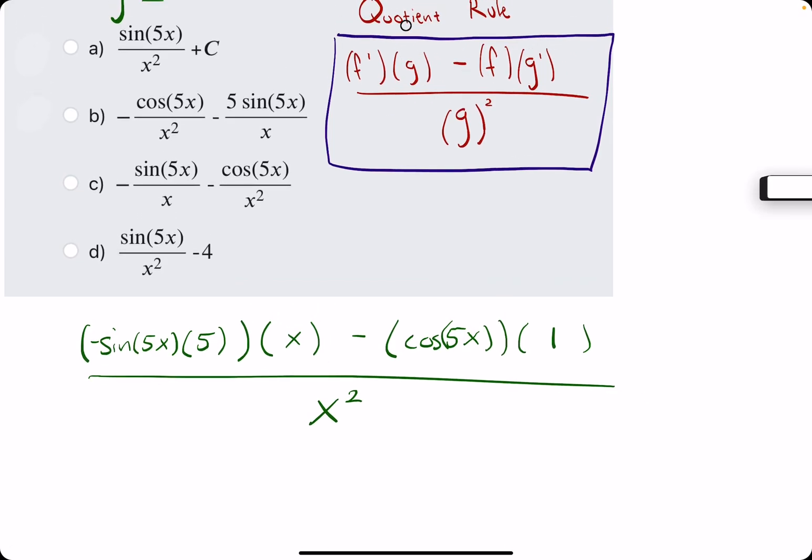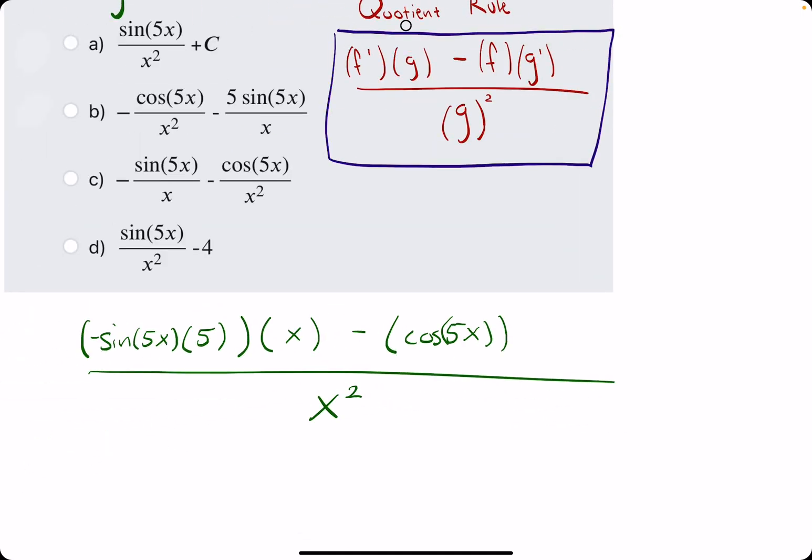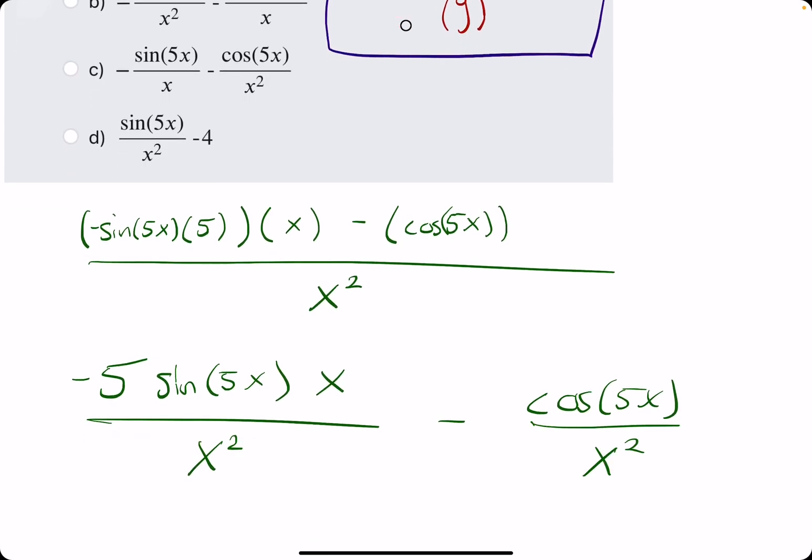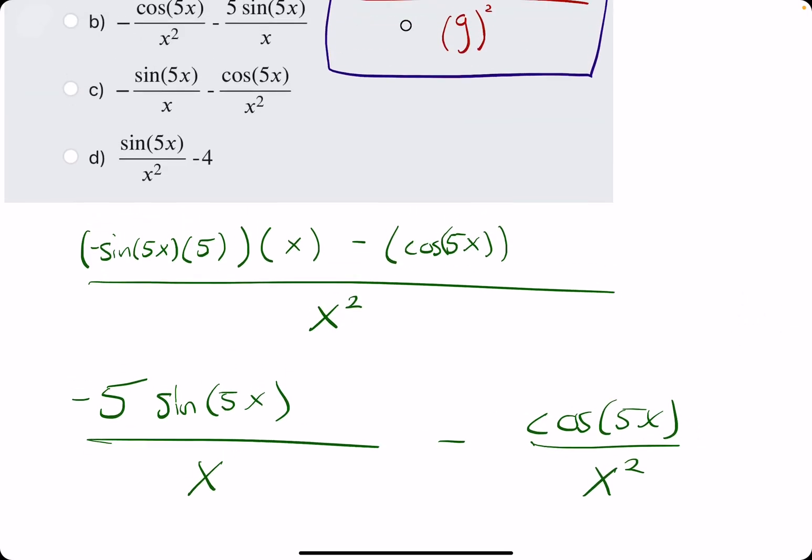And so, g squared would be an x squared on the bottom. In this case, we don't need this 1 here. And, there's nothing that cancels out between the denominator and both of these terms. Actually, it would help to break it up, though. So, let's start by breaking it up. I'll keep the negative. I'll throw the 5 in front of the sine of 5x. And then, I'll keep this x here for now over x squared. We'll have cosine of 5x over x squared. So, the only thing that does actually simplify is the x on top can cancel with 1x from the bottom.